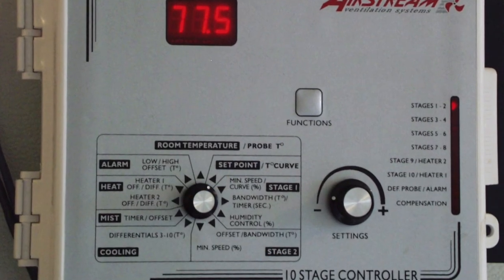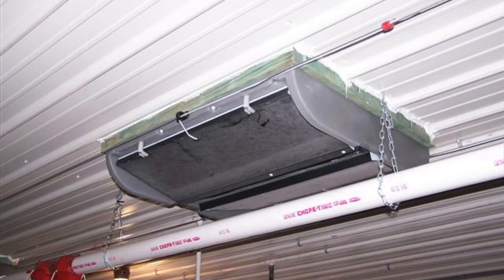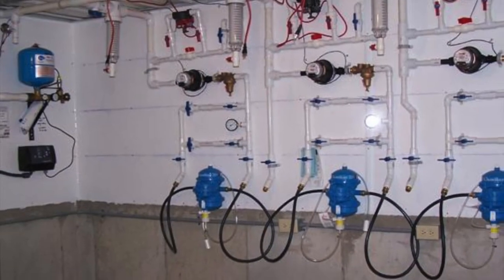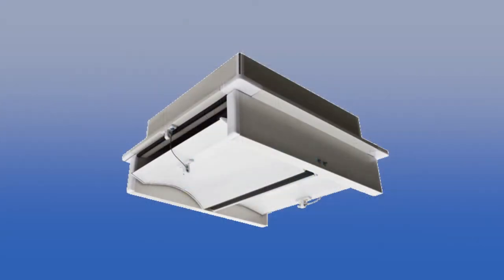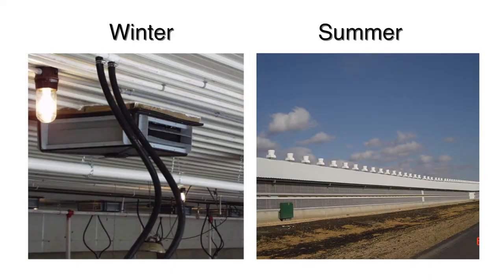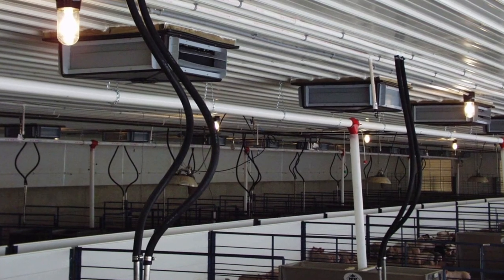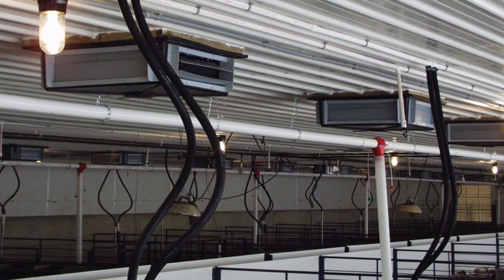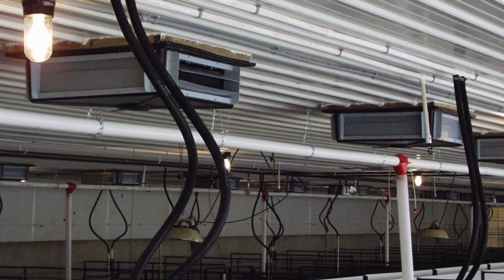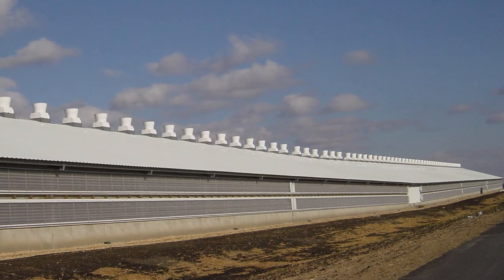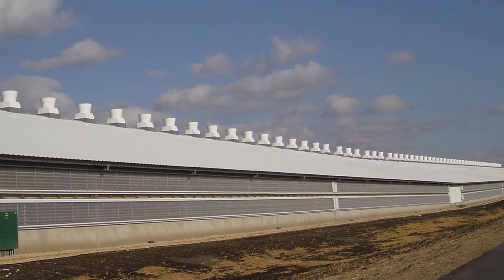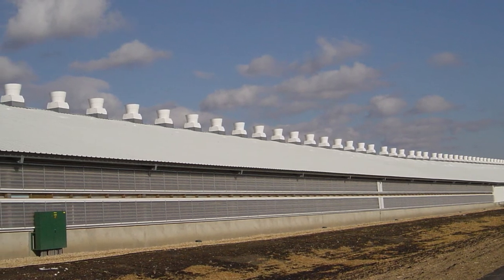The controller can also be programmed to open or close the inlets to maintain the proper static pressure in the building, to operate mixing fans, heaters, and sprinkling systems, or to manage a variety of other environmental control devices. The location of the inlets determines how fresh air is distributed inside the building. Often there are two inlet systems, one for the winter and one for the summer. The winter system, with low air flow rates, will typically have inlets in the ceiling or sidewall spread along the length of the building. The summer system, with high air flow rates, will usually have large inlet openings at the end of the building or in the sidewalls.